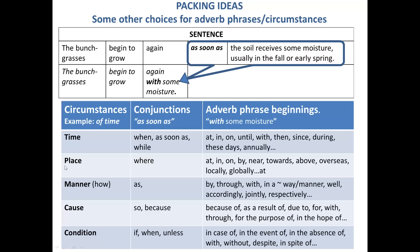For the meaning of place, we can use a conjunction like where, or many adverbials beginning with prepositions, or adverbs such as overseas. And for meanings of manner, cause, and condition, we have conjunctions, and we can pack the meaning expressed using those conjunctions into an adverbial. Please review these, as we're going to practice more shifting of conjunctions to adverbs and adverb phrases.